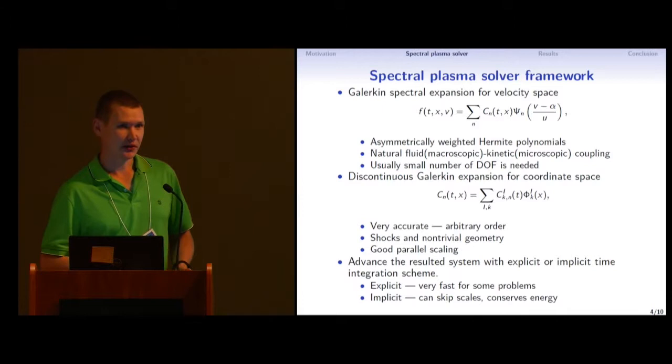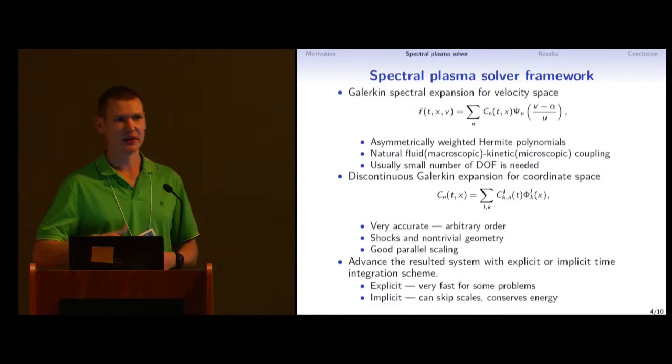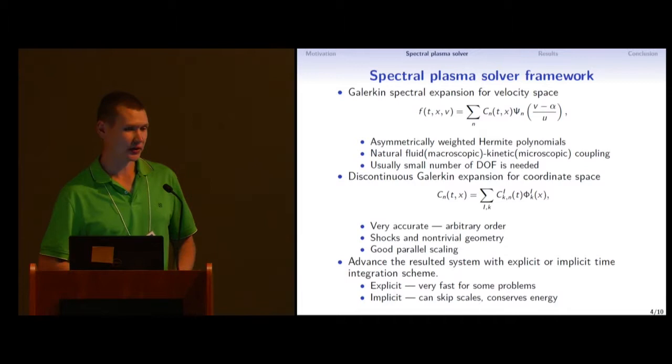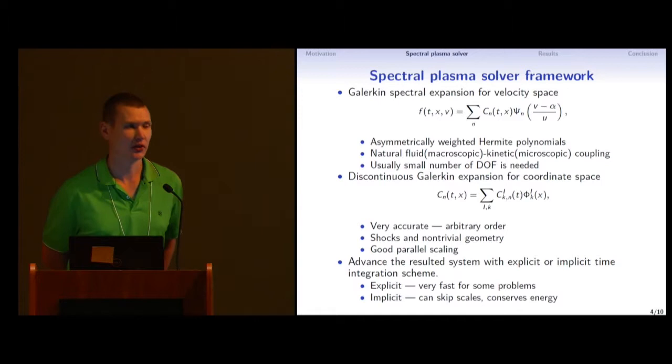For the space discretization, we use discontinuous Galerkin, which is like spectral expansion in each cell. So you have a lot of spatial cells, and in each cell you expand it in a little series inside this cell. It's also very accurate methods. You can get any order. It also handles shocks and non-trivial geometry very well. And what is important is that it's very local method. So it has very good parallel scaling.